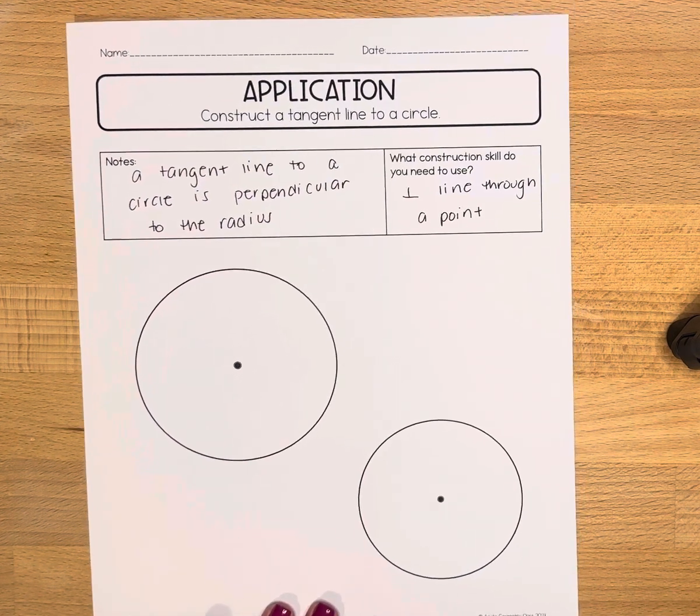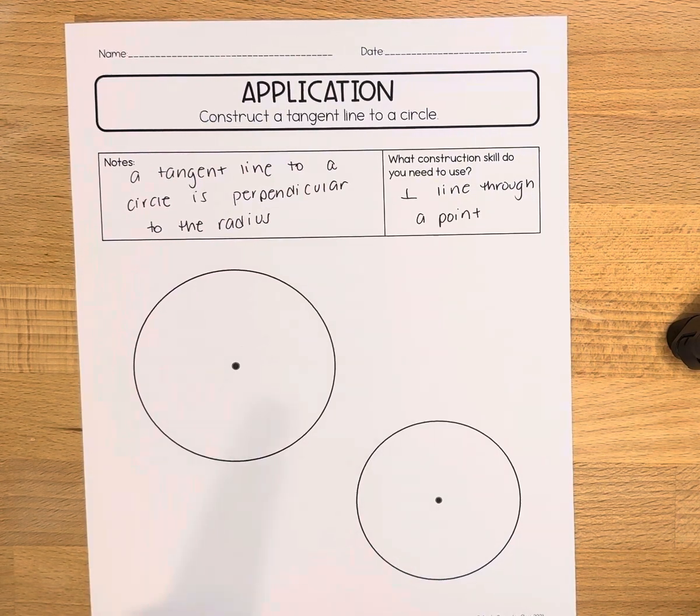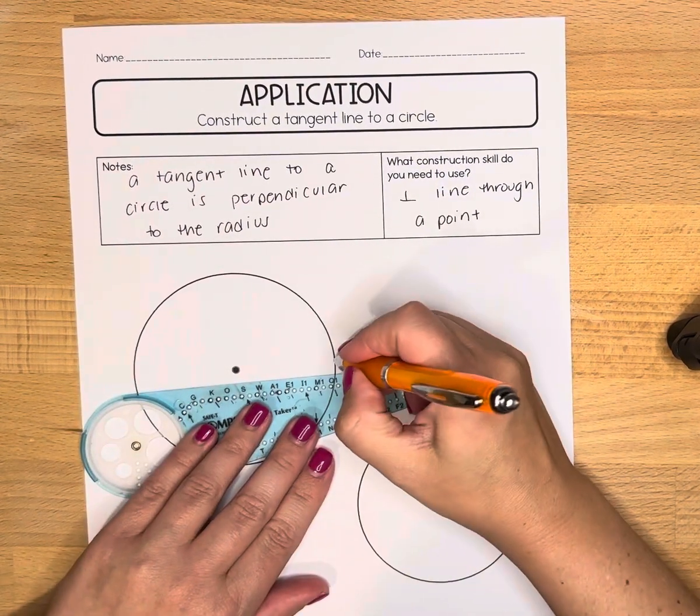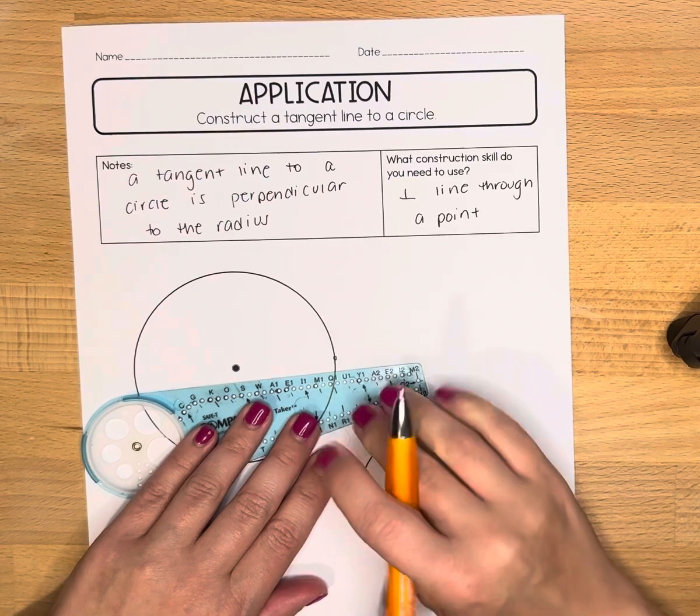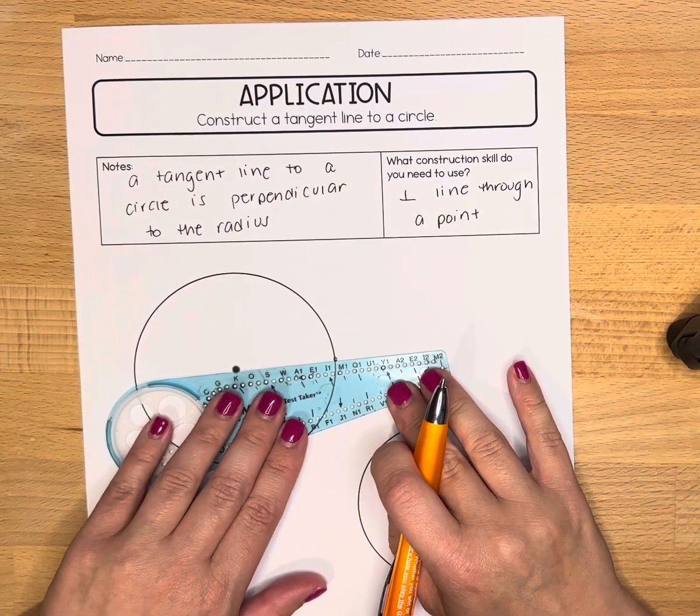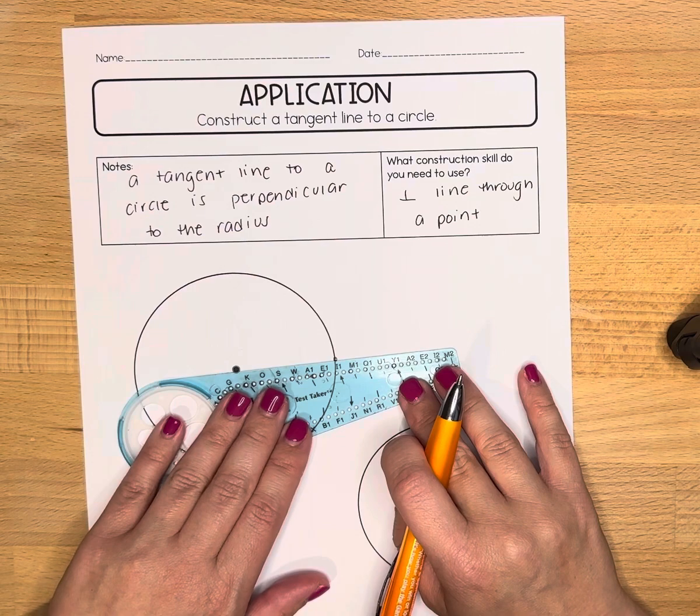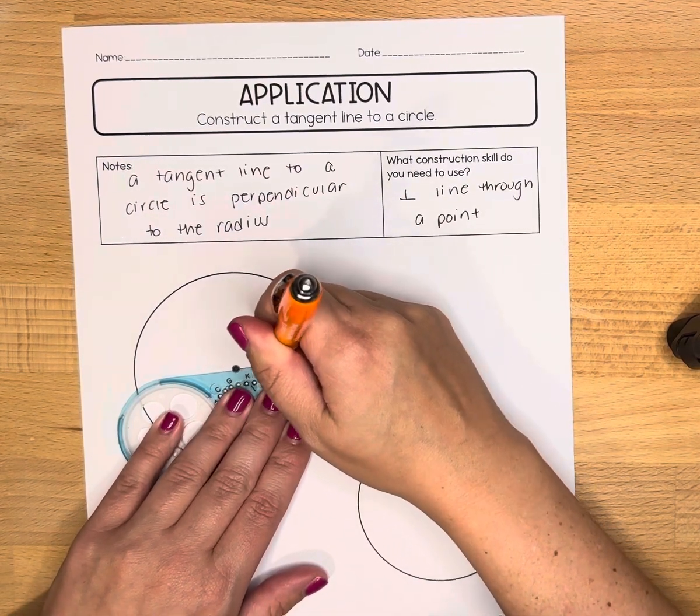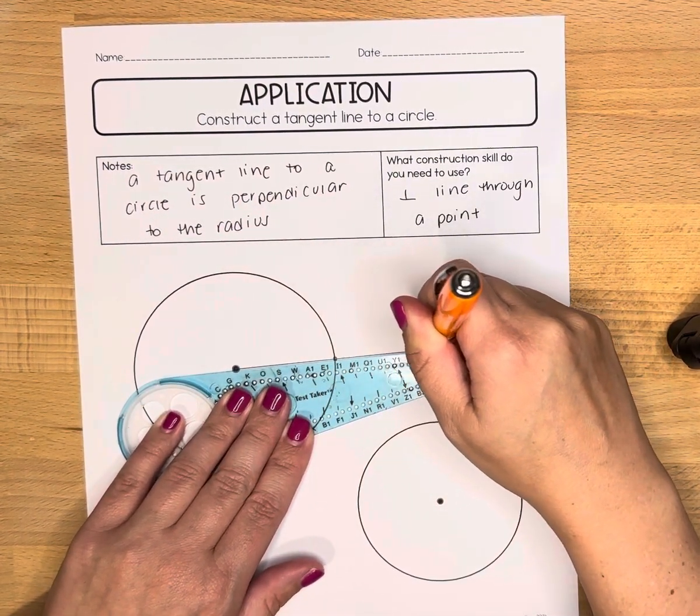The first thing I'm going to do, since we know the tangent line is perpendicular to the radius, is draw in a radius. I'm going to put a point somewhere on the circle and use a straight edge to draw a radius. What I'm actually going to do is draw past the circle. I'm just going to keep going.